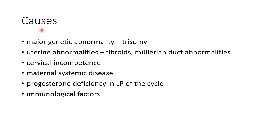Now let us see about the causes of miscarriage or abortion. Major genetic abnormalities like trisomy, uterine abnormalities like fibroids and Müllerian duct abnormalities, cervical incompetence, maternal systemic disease, progesterone deficiency in the luteal phase of the menstrual cycle, and immunological factors are the various causes of miscarriage or abortion.